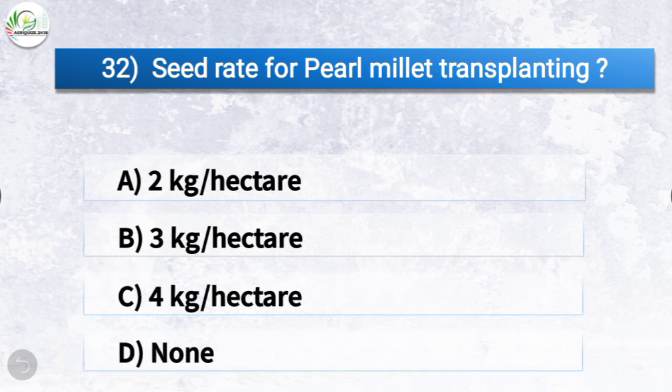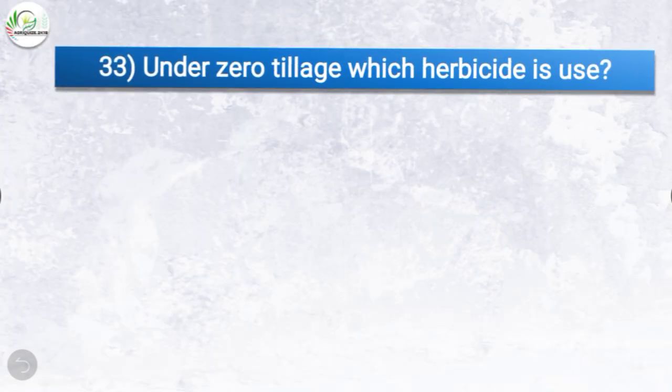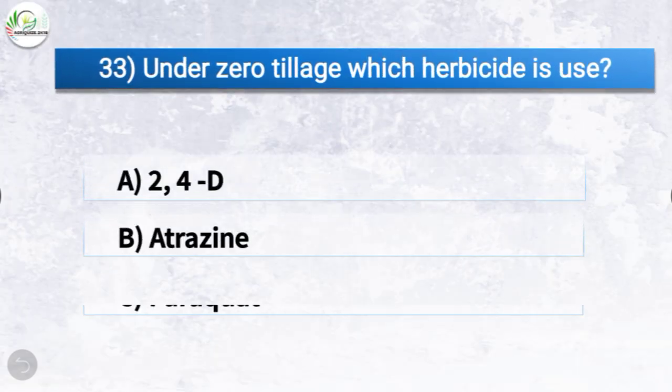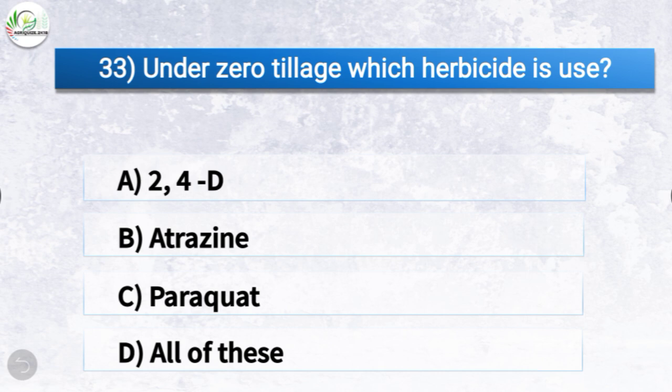Question number thirty-two: seed rate for pearl millet transplanting is how much? The options are 2 kg per hectare, 3 kg per hectare, 4 kg per hectare, or none of these. The correct answer is option A, 2 kg per hectare. So seed rate for pearl millet transplanting is 2 kg per hectare.